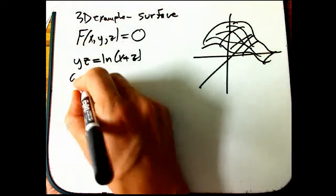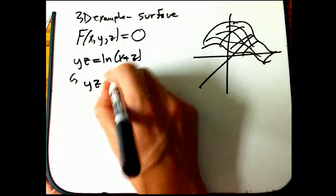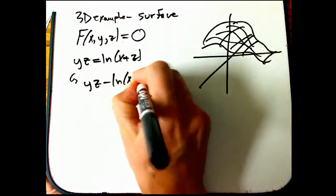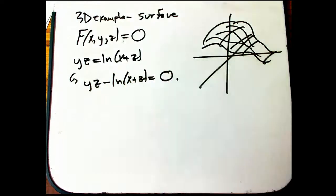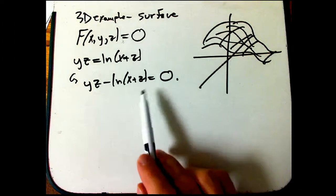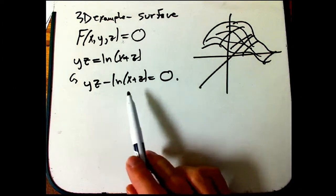And if we just move everything on one side, it's not hard to express it as a level set. You can always express something as a level set of a function on your space just by moving everything to one side.